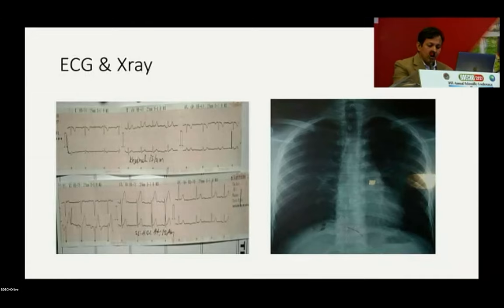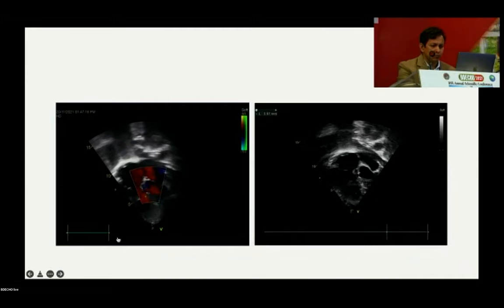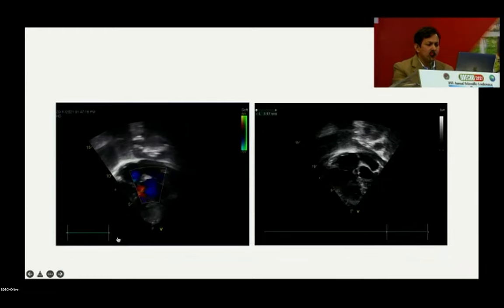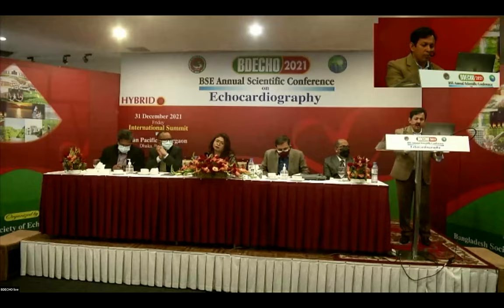On echocardiography, there is a left-to-right shunt with a VSD measuring approximately 3.97 millimeters, with a high interventricular gradient indicating normal pulmonary pressure.